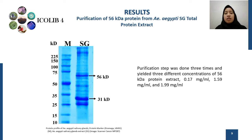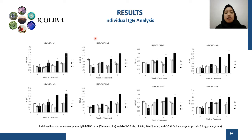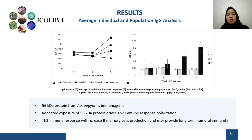Now, directly to the IgG analysis results. As you can see here, the black bar representing group C, which was treated with the 56-kilodalton protein, shows a higher level of IgG compared with the other groups which were not treated with the 56-kilodalton protein. The other IgG analysis also gave the same results, as seen from the average humoral immune response.